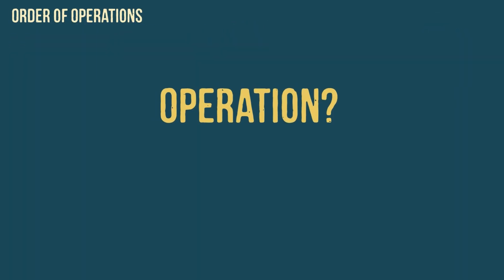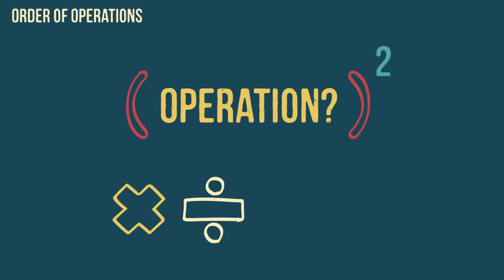So, what is an operation? In mathematics, an operation is an action that is carried out on a number, usually to change it. This could be addition, division or squaring, for example.